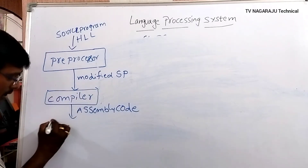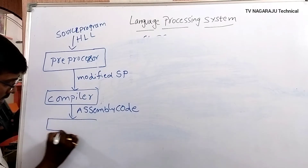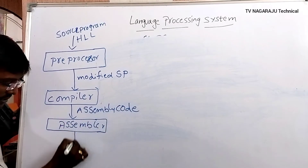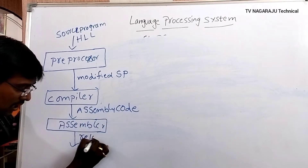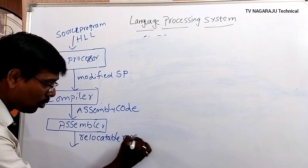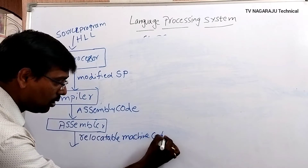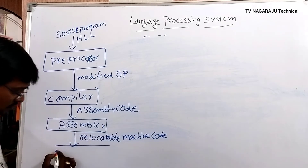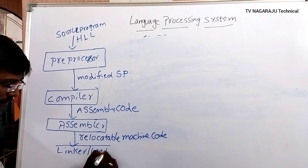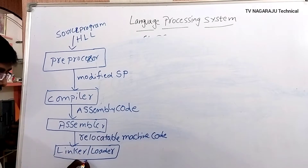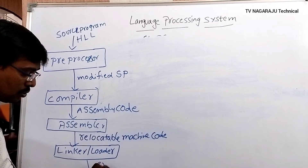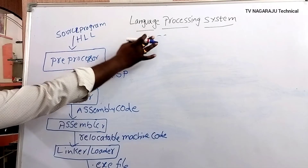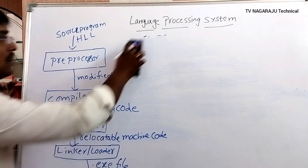The assembly code is passed as input to the assembler. The assembler converts the assembly code into relocatable machine code, also called object code. This object code is then transferred to the linker and loader, which finally produces a .exe file — the executable file. These are the steps required for execution of a program.